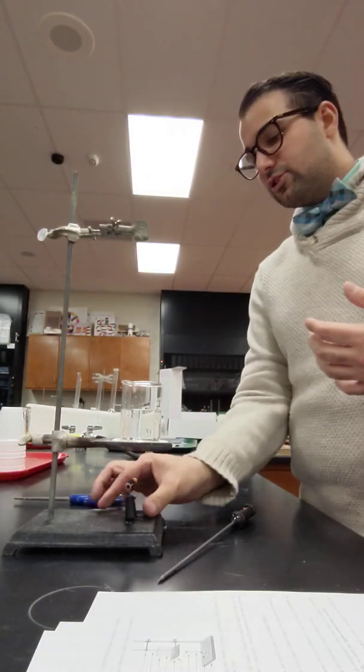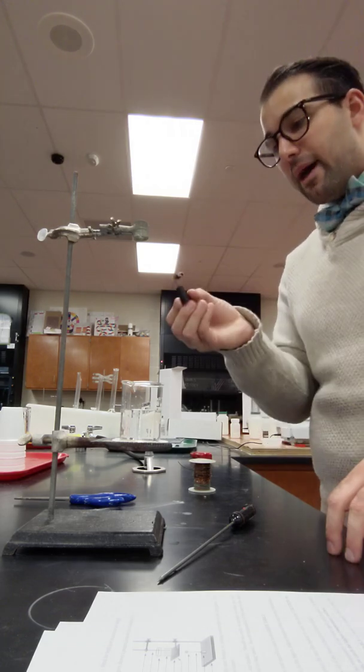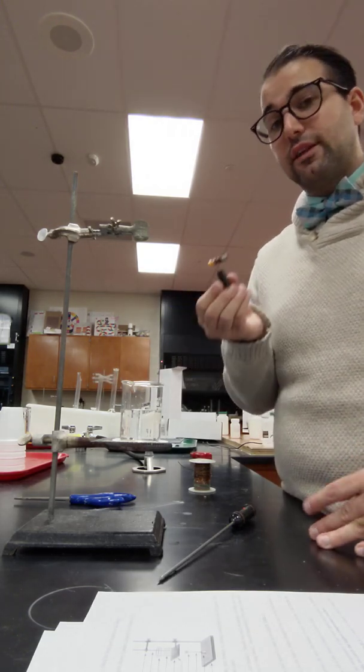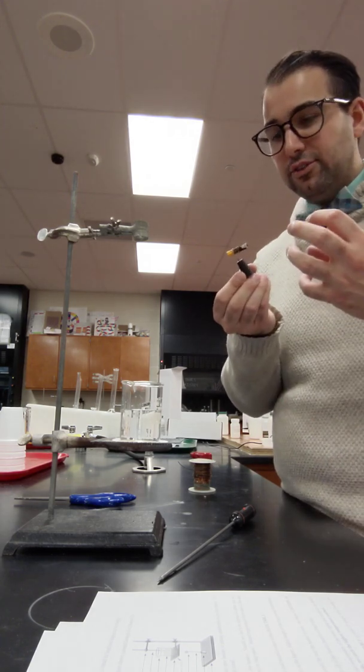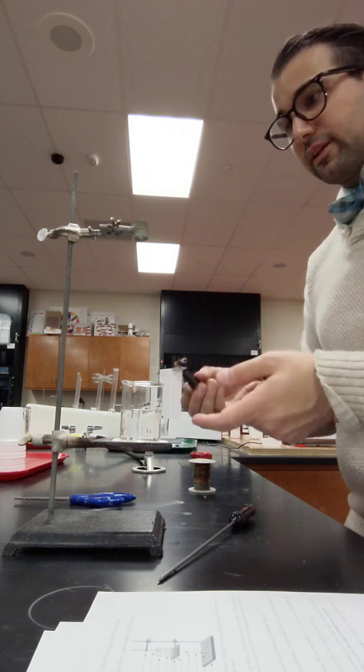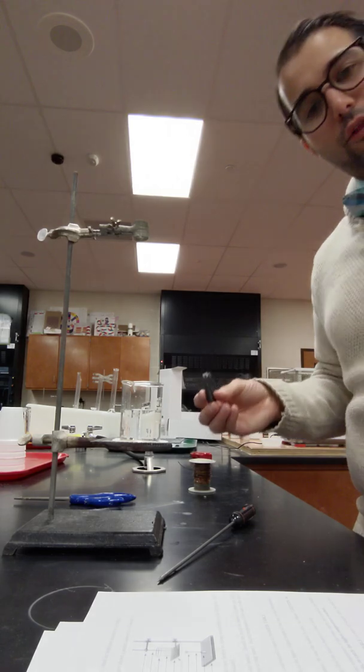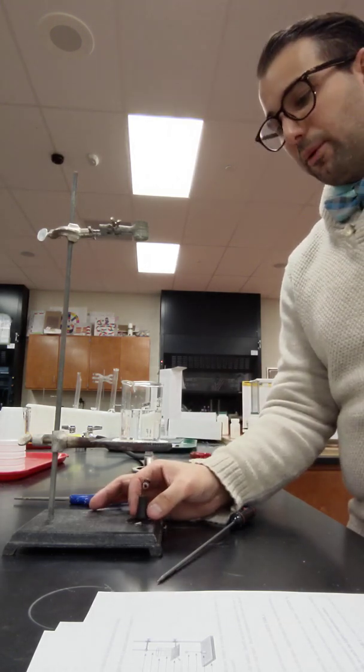In the procedure you're gonna get the mass of the Cheeto before you burn it and then the mass after on the balance and you're gonna write that in your data table. You're gonna see how much of the Cheeto burned and you're also gonna figure out how much energy that required because it transferred that energy to change the temperature of the water and you're gonna follow the post lab calculations to do those steps.